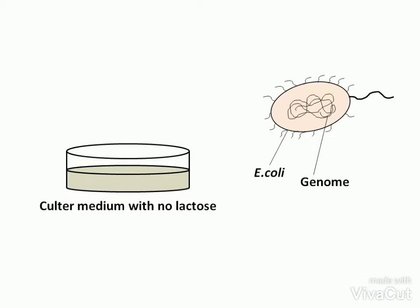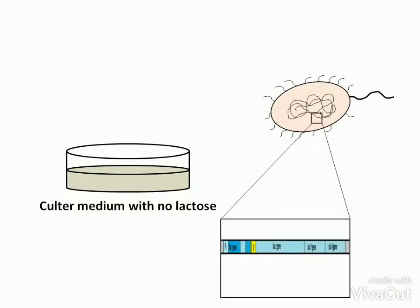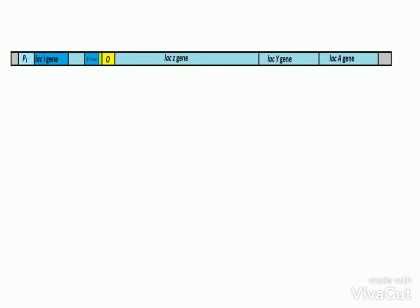If we give a closer look to the DNA of the bacterial genome, we can find a DNA segment which has two parts. One is the regulatory gene. It consists of P-I, the promoter, and LAC-I gene. Here the I stands for inducibility. The LAC-I gene is not under the regulatory control.